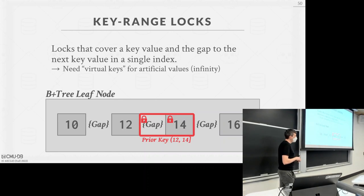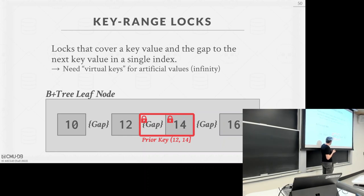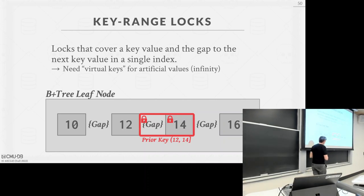A student asks: what does the 'gap' refer to — things that have been deleted? The answer: it's not even deleted, it's just something that doesn't exist. For a prior-key lock from 12 exclusive to 14 inclusive, the gap covers values like 12.1, 12.2, 12.3 — anything greater than 12 that gets inserted will be covered by this lock. So it's about future insertions being locked.